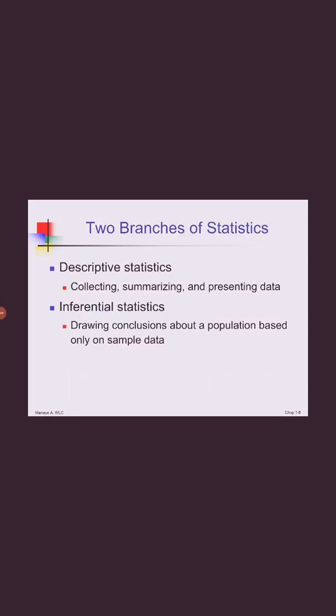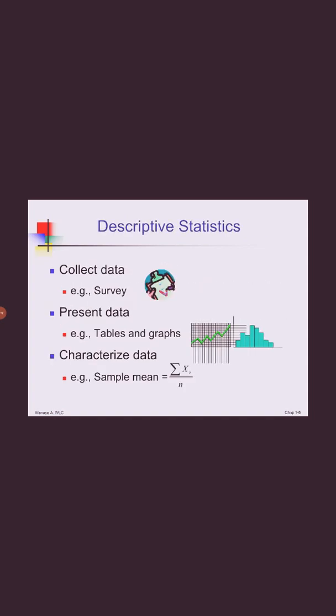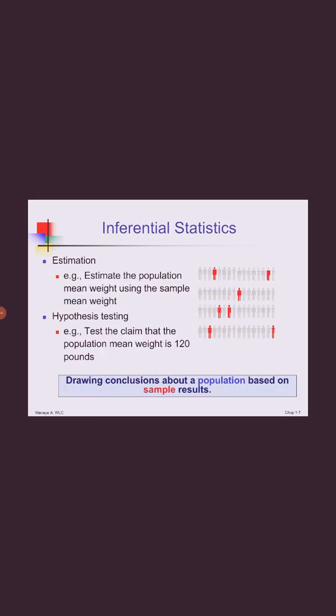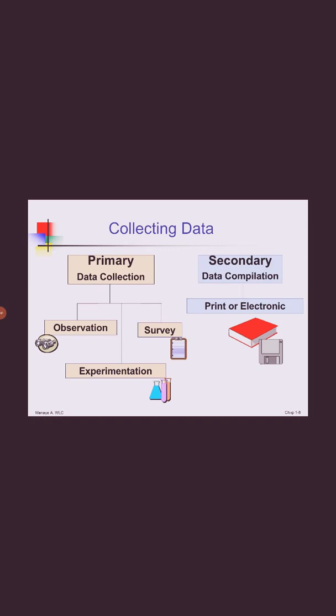There are two branches of statistics: descriptive and inferential. Descriptive mainly helps to summarize and illustrate data, but in inferential statistics, we come up with estimation mechanisms, drawing conclusions. The inferential part estimates or helps to hypothesize and estimate the population based on the sample measurement.